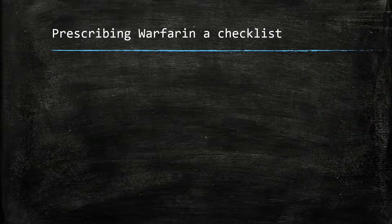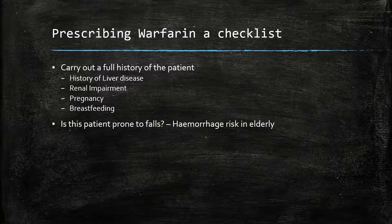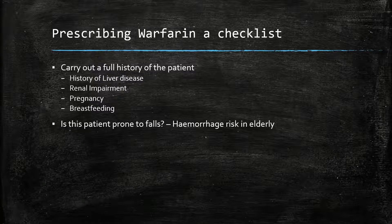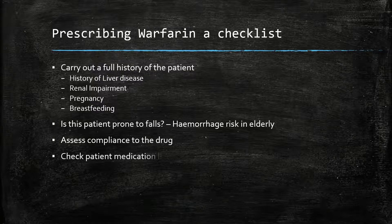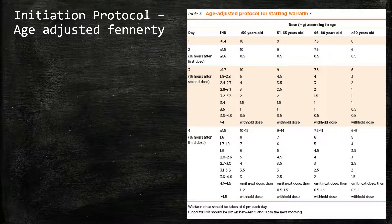Here is a checklist for prescribing warfarin in a hospitalised patient. We must carry out a full history, taking into account liver disease, renal impairment, pregnancy, and other important conditions which may affect medication administration. With elderly patients, assess fall risk, as falls can provoke haemorrhage. Assess compliance — will the patient cooperate with regular bloods and checkups? Check the medication list and ensure they have been charted on warfarin. Then follow the hospital protocol for initiation of warfarin; one such protocol is the Fennerty protocol. Here is an example of an age-adjusted Fennerty protocol, which provides guidance on target INRs and when to check them.